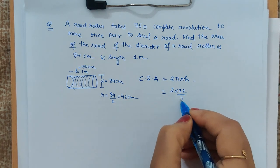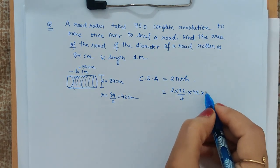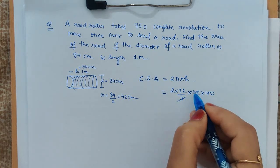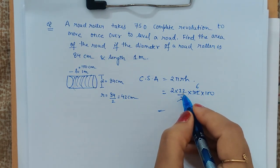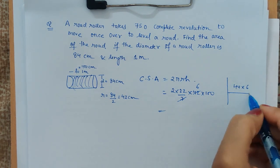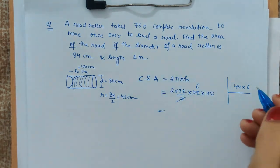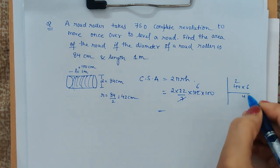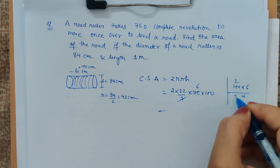We will be substituting those values, so r is 42 and h is 100. Now just cancel it: 44 into 6. Always make a rough column just beside the main body of the solution.